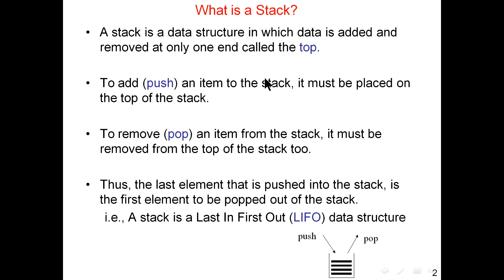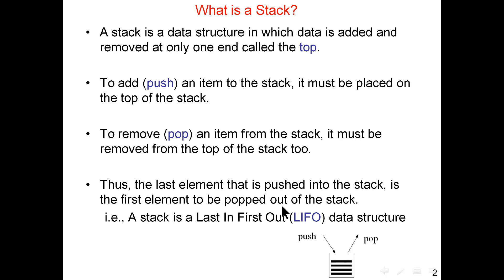A stack is a linear data structure where data is added and removed at only one end called the top. We have two operations in the stack: push — which pushes an item onto the stack, placing it on the top — and pop — which removes an item from the top of the stack. The last element pushed into the stack is the first element to be popped out, which is why we call it a Last In First Out data structure.